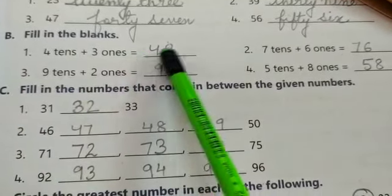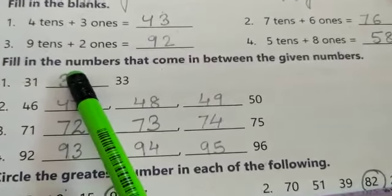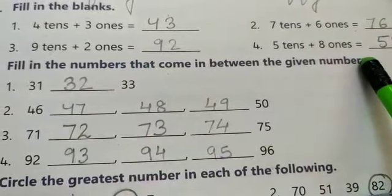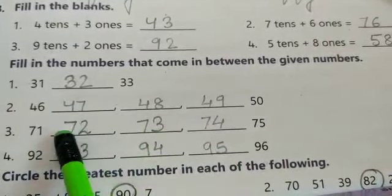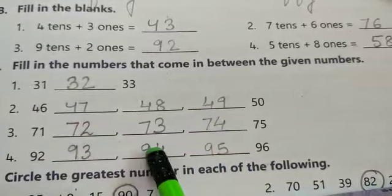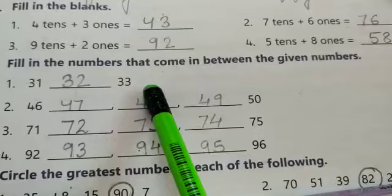Expanded form is given here and we have to write the numbers in fill in the blanks. Sums number C. Fill in the numbers that come in between the given numbers. You can see the numbers are given. We have to write the numbers that come in between. 31 dash 33. So 31, 32, 33.